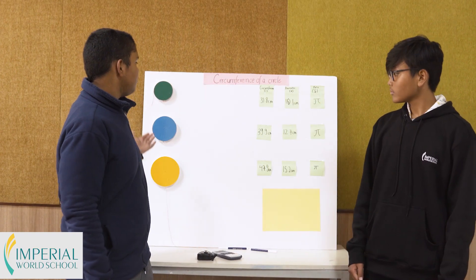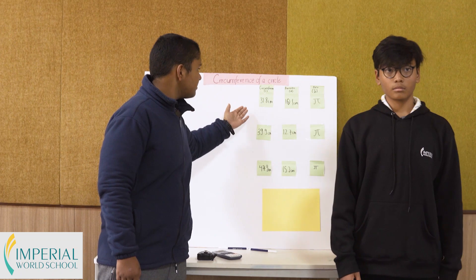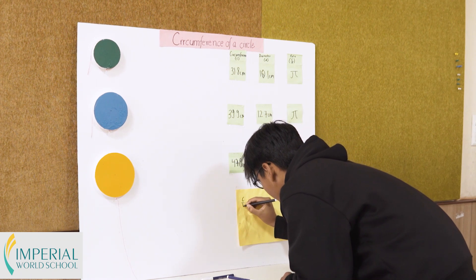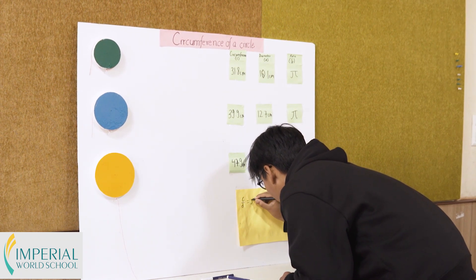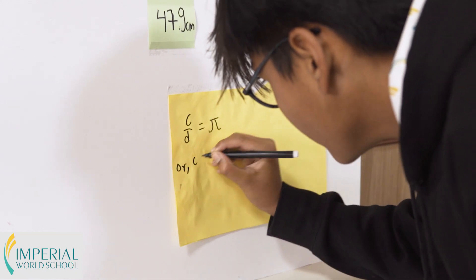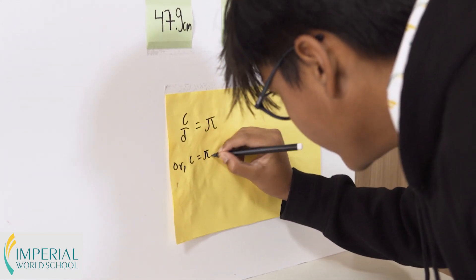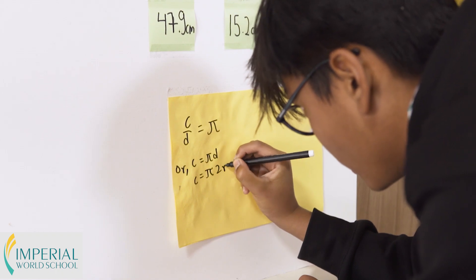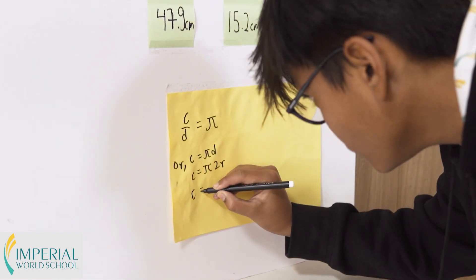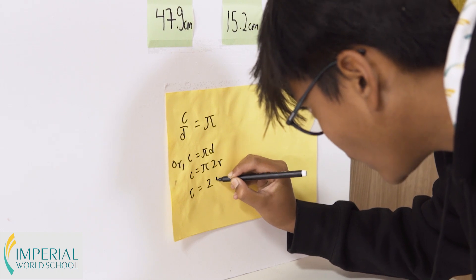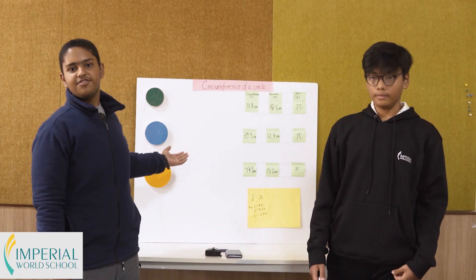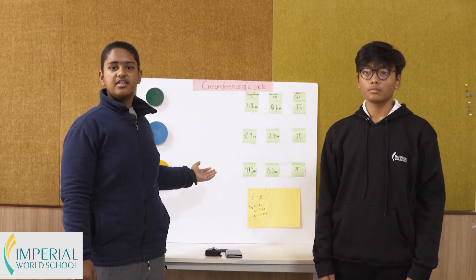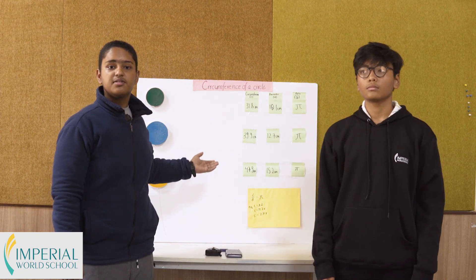From this activity, we can conclude that the ratio of the circumference and diameter is pi — that is C by D is equal to pi, or C is equal to pi times D. But instead of D, we can write 2r, which gives us C is equal to 2 pi r. So when only the diameter is given, the circumference is pi d, and when only the radius is given, the circumference is 2 pi r.